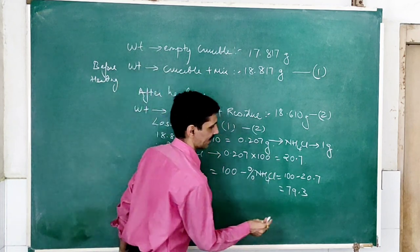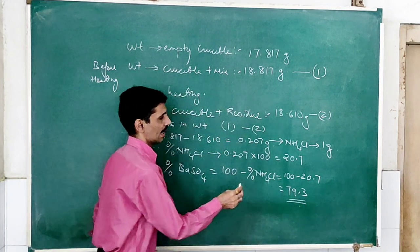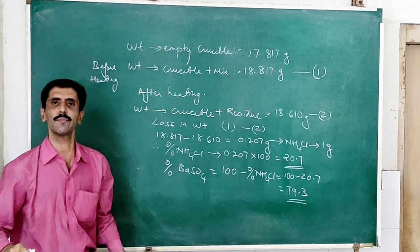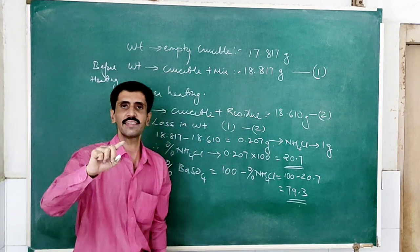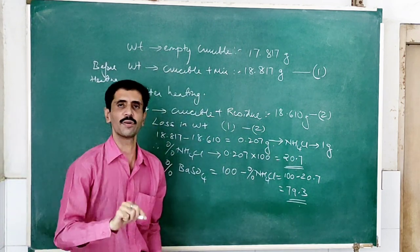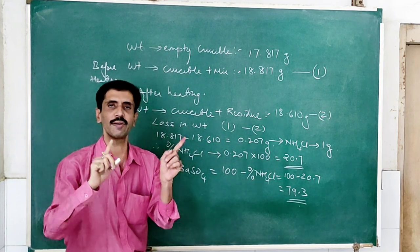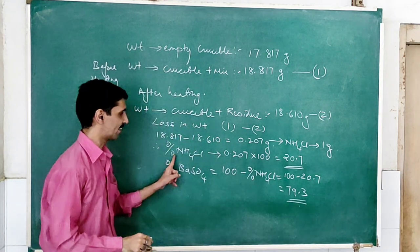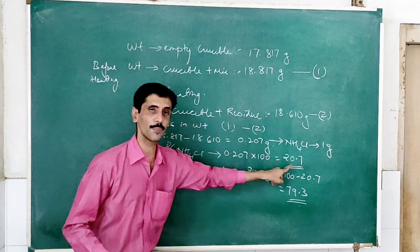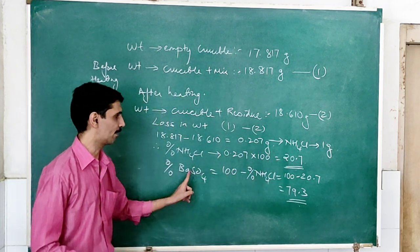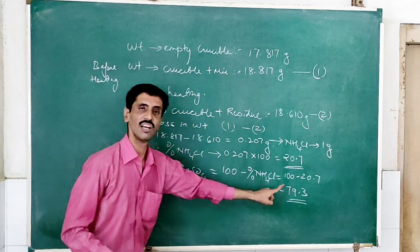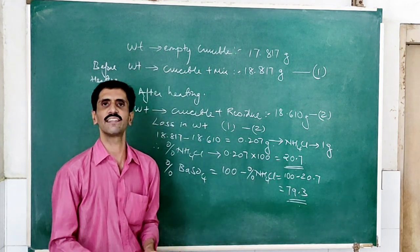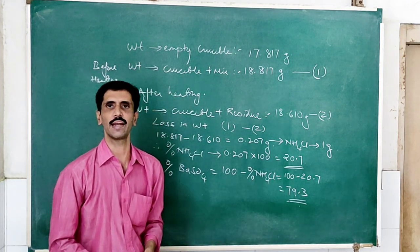So that gives us 79.3%, and this is our final result. The aim of the experiment was to find the percentage of barium sulfate and ammonium chloride present in the mixture: the percentage of ammonium chloride is 20.7% and the percentage of barium sulfate is 79.3%. I am very sure you have understood this entire experiment very well.